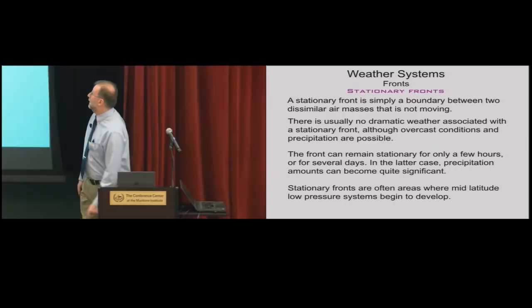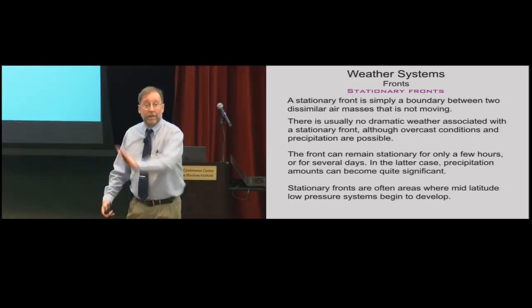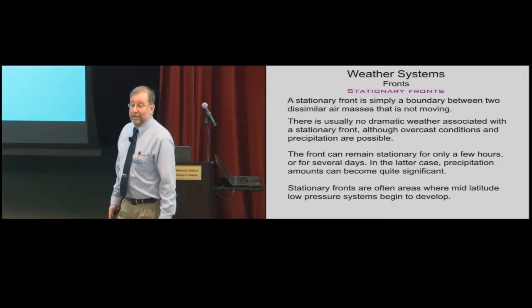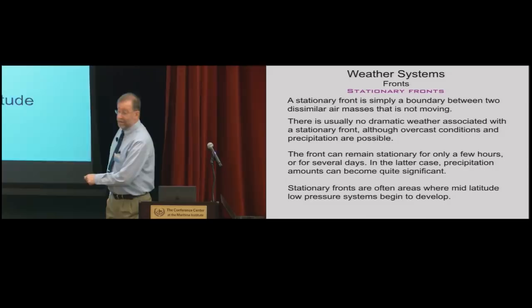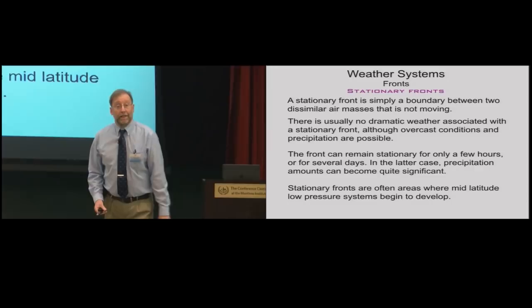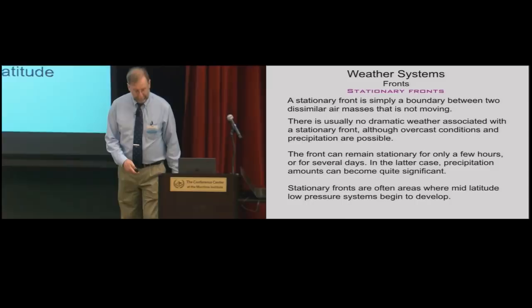A stationary front is simply not moving. You still have warm air rising over the colder air and some light, perhaps intermittent precipitation. Because it stays in one place for a long time, the accumulated precipitation can become significant. These are areas where mid-latitude lows often begin to develop, and that's what we'll move on to next — the mid-latitude low, which can cause real difficulty if you're sailing any distance over the ocean.